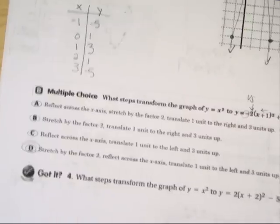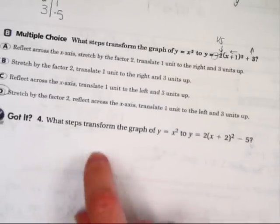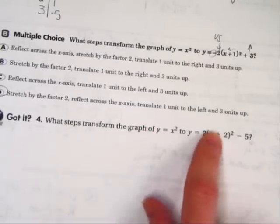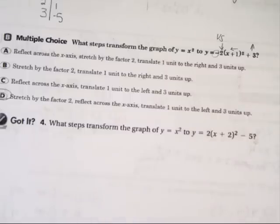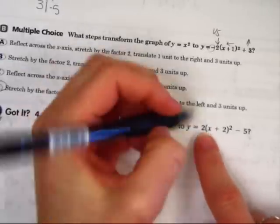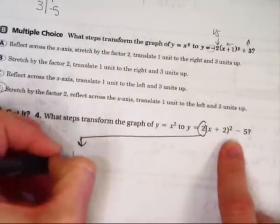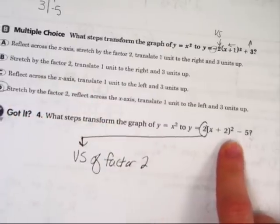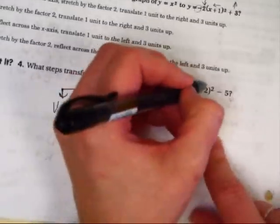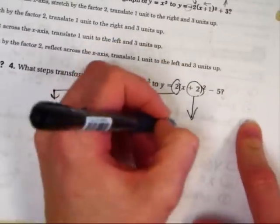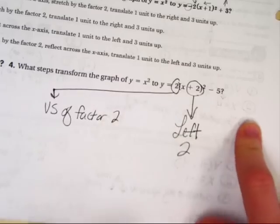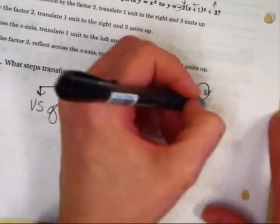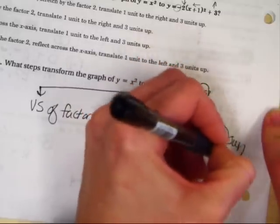Let's take a look at got it number 4. What steps transform the graph of y = x² to y = 2(x + 2)² - 5? Well, you should notice, maybe first of all, at least what I've noticed right away, is this outside 2. This outside 2 makes a vertical stretch of a factor of 2. In other words, it gets skinny, it gets twice as tall. This plus 2 moves it to the left 2 units. This minus 5 in the back moves it down 5 units.